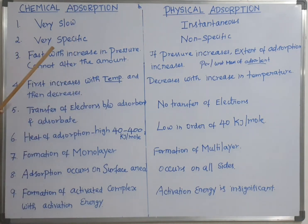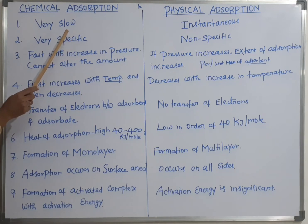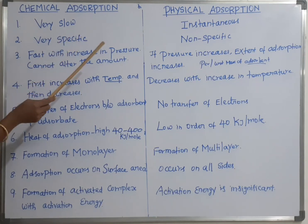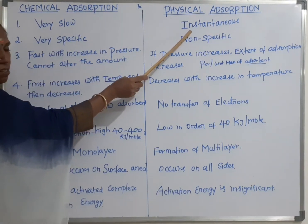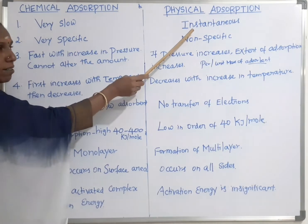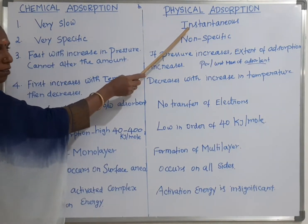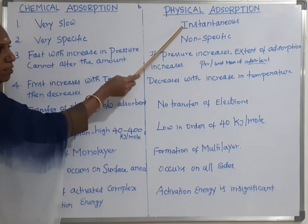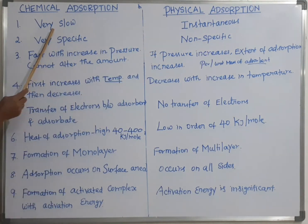First difference: chemical adsorption is very slow. In the adsorption process, it is very slow. But physical adsorption is instantaneous. Physical adsorption is instantaneous, while chemical adsorption is very slow.